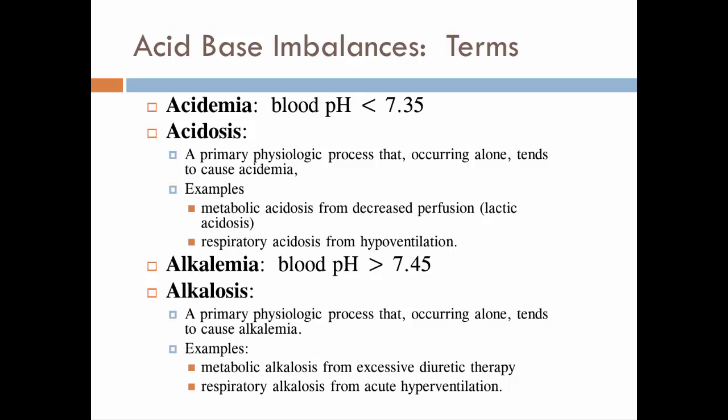So first, let's get some terminology down. We have acidemia which is basically when your blood pH is below 7.35. Acidosis is the primary physiological process that, occurring alone, tends to cause acidemia. Those terms can almost be used interchangeably. I won't get into the nitpicky detail when to use one versus the other, but be familiar with both.